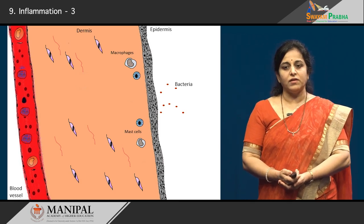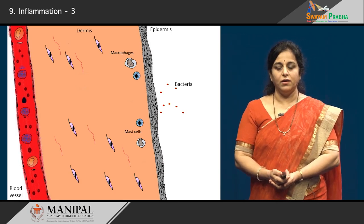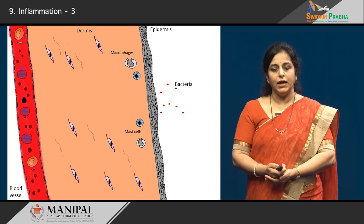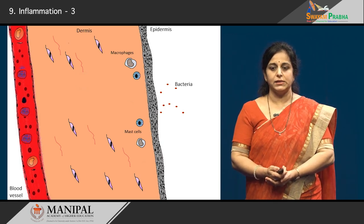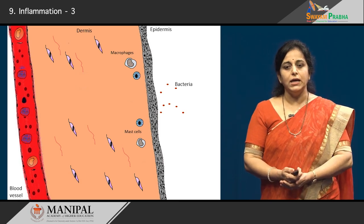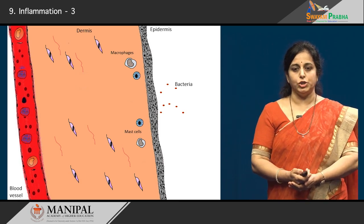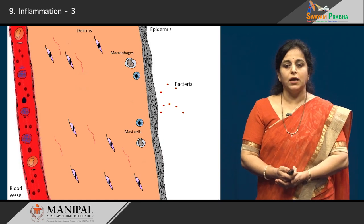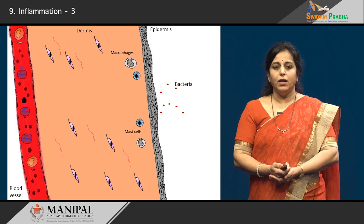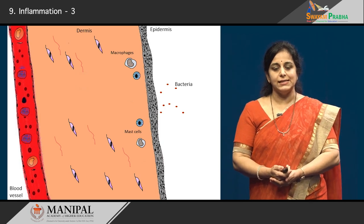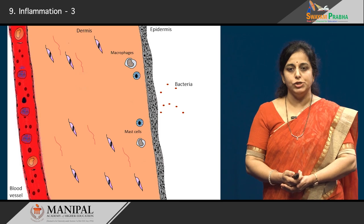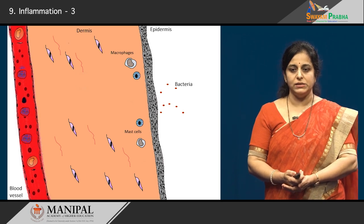Now let us look at this schematic representation of skin. You can see the skin has the covering epithelium which is the epidermis. Beneath the epidermis is the dermis, which is basically a supporting tissue that has fibroblasts, collagen, blood vessels, etc. Within the blood vessels are defense cells against any injurious agents — that is the WBCs.